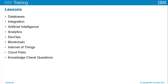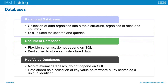Starting off with databases. A database is an organized collection of data stored on a computer. Traditional databases organize data in rows and columns and utilize a Structured Query Language, or SQL, to access the data. These are known as SQL databases. Databases that do not depend on SQL are referred to as NoSQL databases. There are many different types, but three are focused on here.